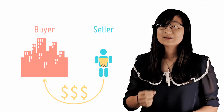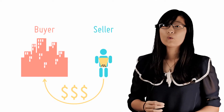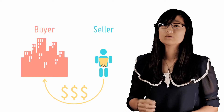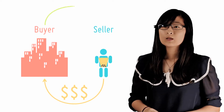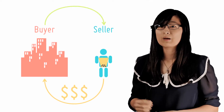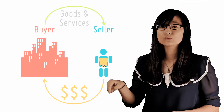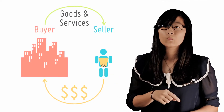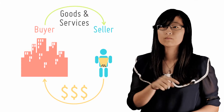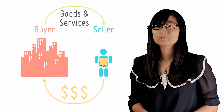The second principle is that goods and services flow in an opposite direction relative to money payments. So when households consume goods and services, the payment flows from the household to the firm, while the purchased product moves from the firm to the household.